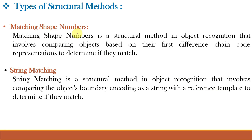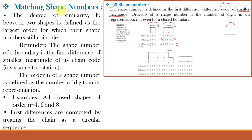Let us first understand matching shape numbers in detail. As the name suggests, matching shape numbers means we will be matching two different shape numbers: one shape number that is present in the database and the second shape number of the object present in our image. This is the slide we studied in video lecture number 70 on boundary descriptors, where we understood simple boundary descriptors, shape numbers, and Fourier descriptors. The shape number is the first difference chain code of smallest magnitude, and the order n of a shape number is the number of digits present in the shape number. For any object, we first find out the chain code, then the difference chain code, make that difference chain code of the smallest magnitude, and that is our shape number.